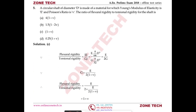Question number five: a circular shaft of diameter d is made of a material with Young's modulus of elasticity E and Poisson's ratio μ. Find the ratio of flexural rigidity to torsional rigidity of the shaft.